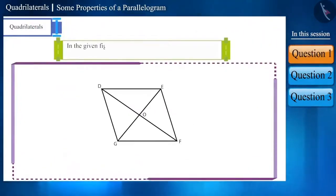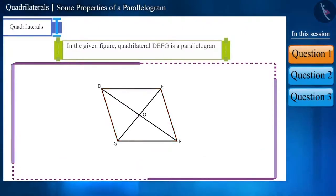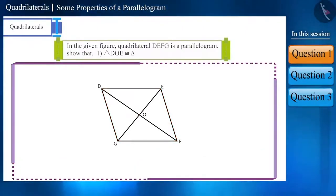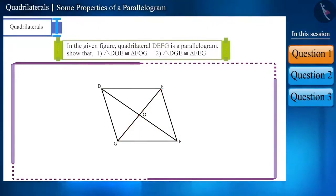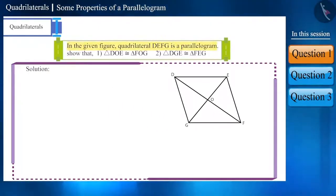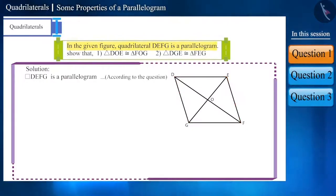In the given figure, quadrilateral DEFG is a parallelogram. Show that triangle DOE and triangle FOG are congruent, and that triangle DGE and triangle FGE are also congruent. According to the question, DEFG is a parallelogram.